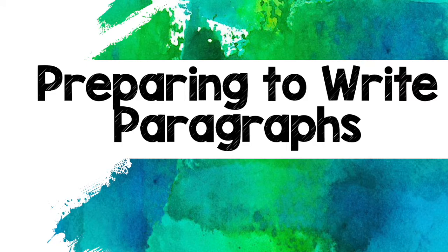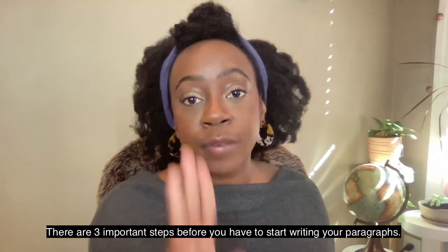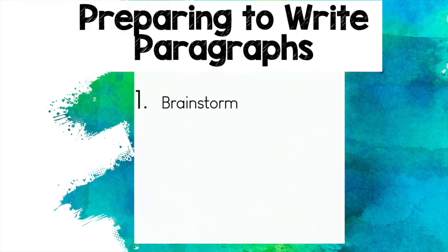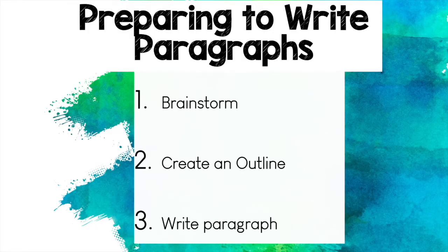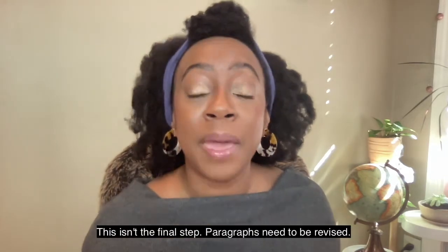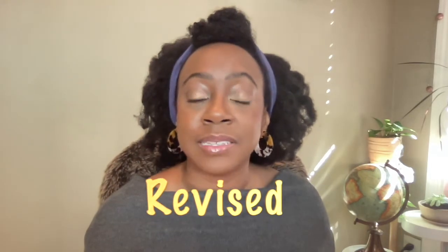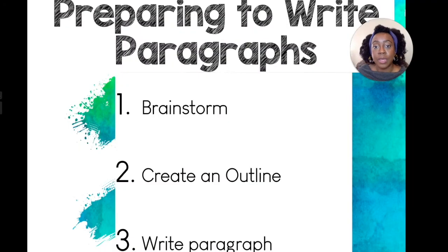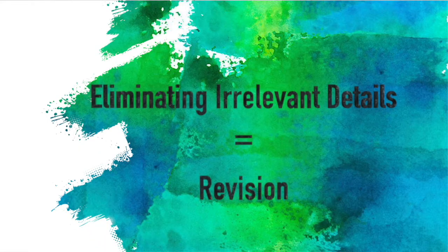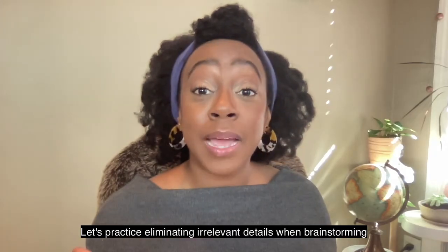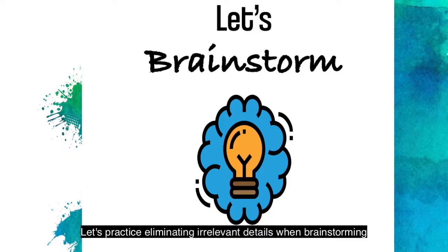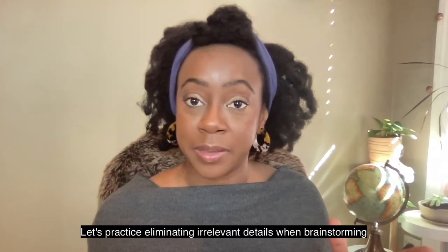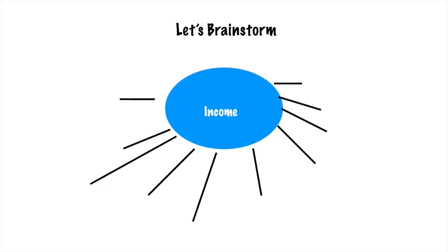There are three important steps that you have to take before you start writing your paragraphs. First, you have to brainstorm. Second, you outline. Third, you write the paragraph. This isn't the final step — paragraphs still need to be revised and edited, and eliminating irrelevant details is one way that you can revise your work. So let's practice eliminating irrelevant details when brainstorming.